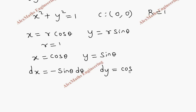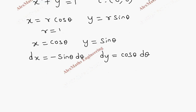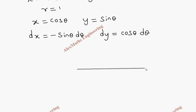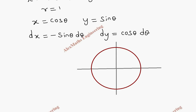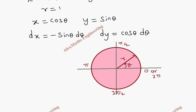And dy is cosθ dθ. Looking at the diagram, we have horizontal and vertical axes with a circle of radius 1 centered at the origin. Using the parametric form, θ varies from 0 to 2π, where 0 is the starting point, π/2, π, and 3π/2 are marked, and 2π is the endpoint.